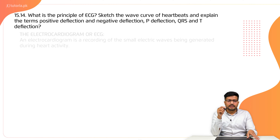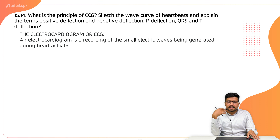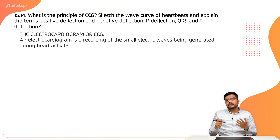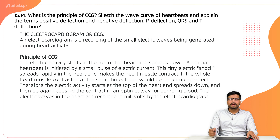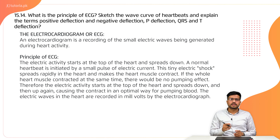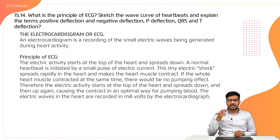Let's start. First, we have ECG. ECG is a device that we use to study our heart. The working principle is that the heart, at the time of contraction, generates an electrical signal. An electrocardiograph studies the heart and detects heart abnormalities.